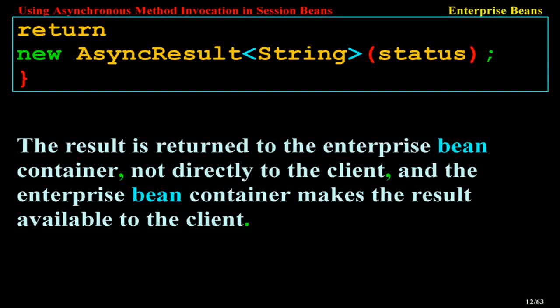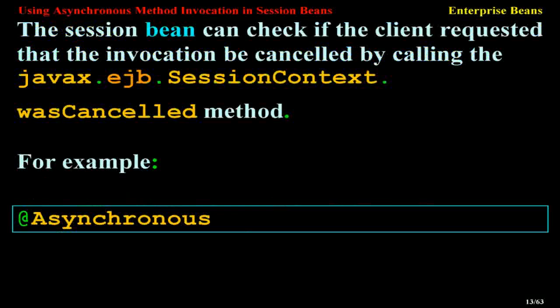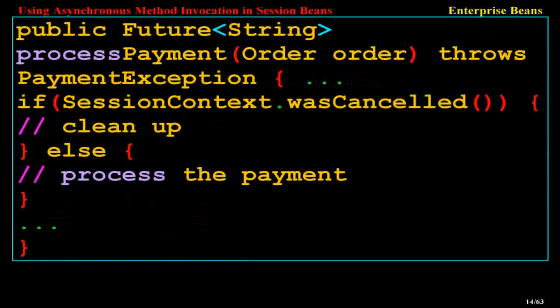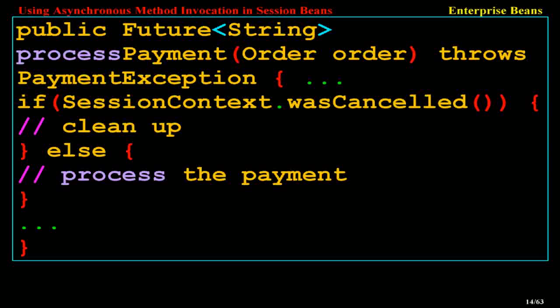The Session Bean can check if the client requested that the invocation be cancelled by calling the javax.ejb.SessionContext.wasCancelled() method. For example: @Asynchronous public Future<String> processPayment(Order order) throws PaymentException { if (sessionContext.wasCancelled()) { cleanUp(); } else { processThePayment(); } }